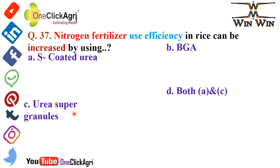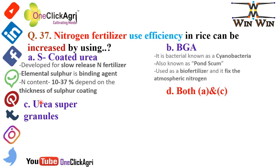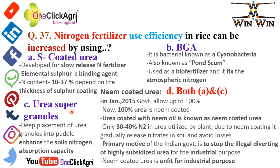Question number 37: Nitrogen fertilizer use efficiency in rice can be increased by using both sulfur-coated urea and urea super granules. Sulfur-coated urea is developed for the slow release of nitrogen fertilizer; it uses elemental sulfur and binding agents. Nitrogen content in sulfur-coated urea ranges between 10 to 37 percent depending on the thickness of the sulfur coating.